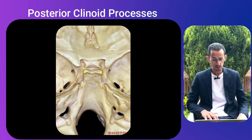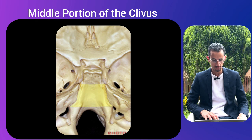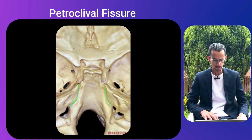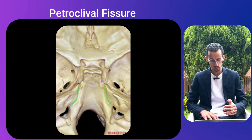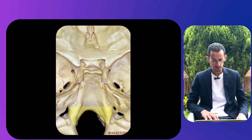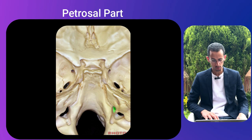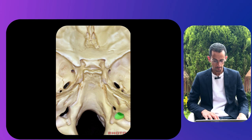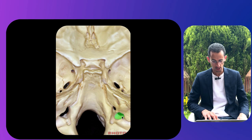The middle portion of the clivus is bounded laterally by the petroclival fissure, which the inferior petrosal sinus follows before terminating at the jugular foramen. So the inferior petrosal sinus travels along the petroclival fissure and empties into the petrosal part of the jugular foramen, while the sigmoid sinus empties into the sigmoid part of the jugular foramen.